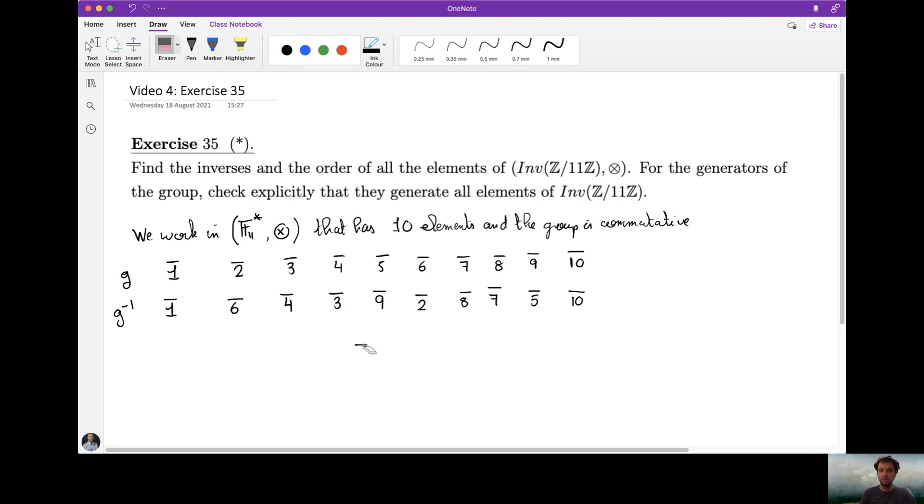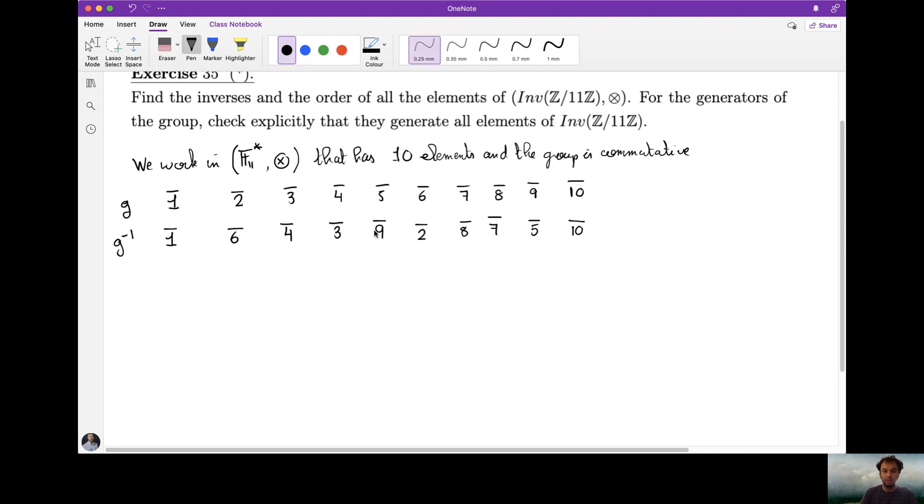Now let us find the orders of the elements. If we want to find the orders of the elements, the best thing that we should do is to use Euler's theorem. So remember, Euler's theorem is saying that the possible orders are the divisors of the number of elements of the group. Here we have 10 elements, so possible orders are 1, 2, 5, and 10.